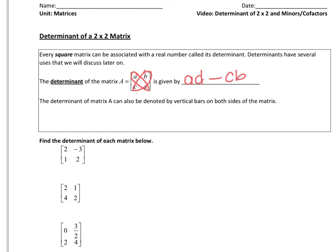The determinant of matrix A can also be denoted by vertical bars on both sides of the matrix. So if I have matrix A and I want to find the determinant, we could write it like this — this means the determinant of matrix A, which is equal to AD minus CB.